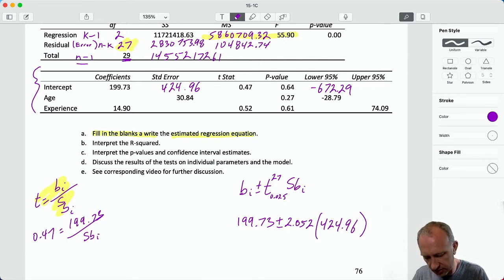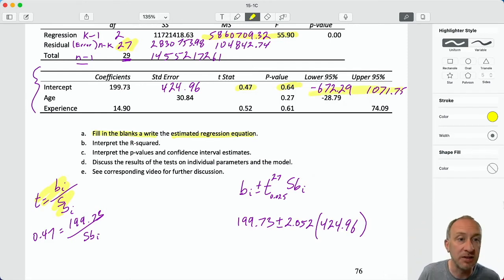We can get our lower and upper limits. That point estimate 199.73 minus 2.052 times 424.96 gives us -672.29 to 1071.75. That's a huge interval due entirely to that large standard error. And so here we see something that we would expect: small T stat, large p-value. If that T statistic is closer to zero, the larger is that p-value. And that large p-value is consistent with an interval that crosses zero. So everything here makes sense. It's good to double check things because you can spot if something doesn't seem right.